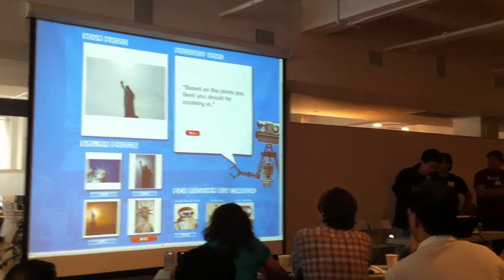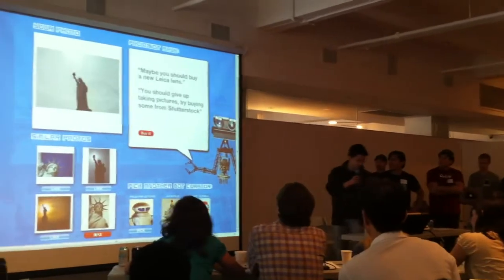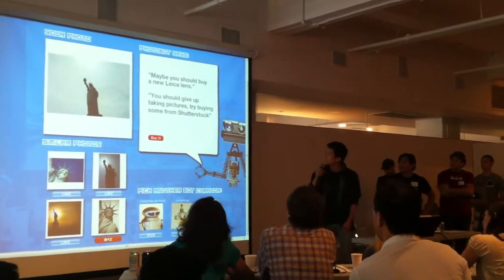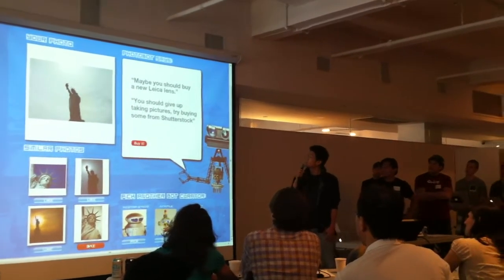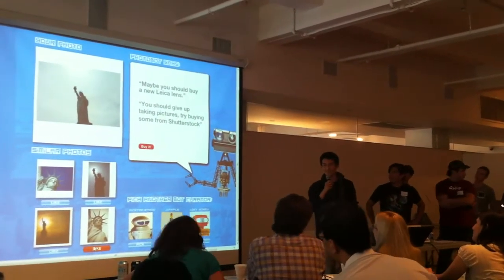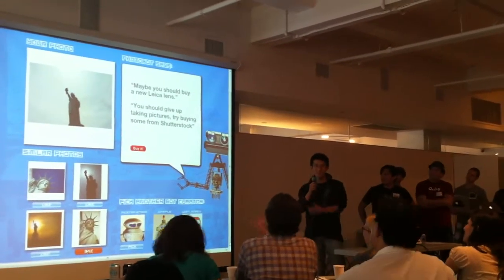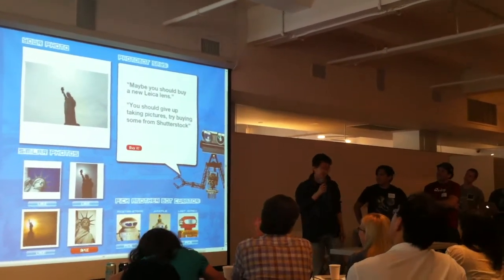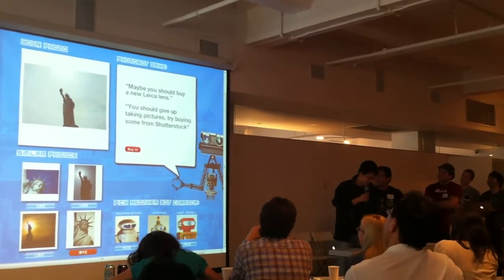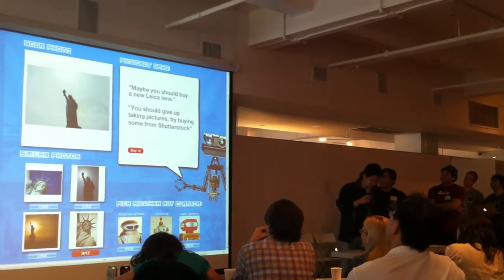There's also a different light option. For example, this one — Shutterstock. So this is the monetization technique: based on your camera, buy a camera, or just buy photos from Shutterstock.